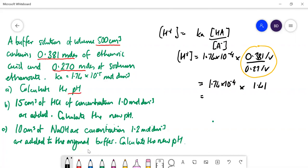And times by the Ka. 2.45 times 10 to the minus 5. Take the negative log of that to get the pH. pH is equal to 4.61 to 2 decimal places.